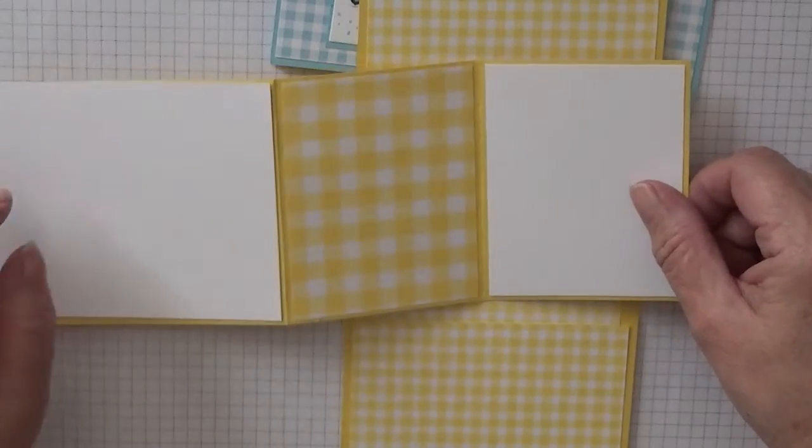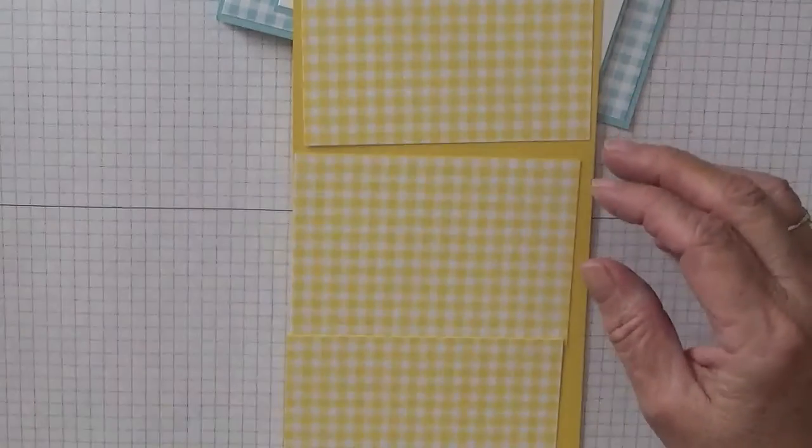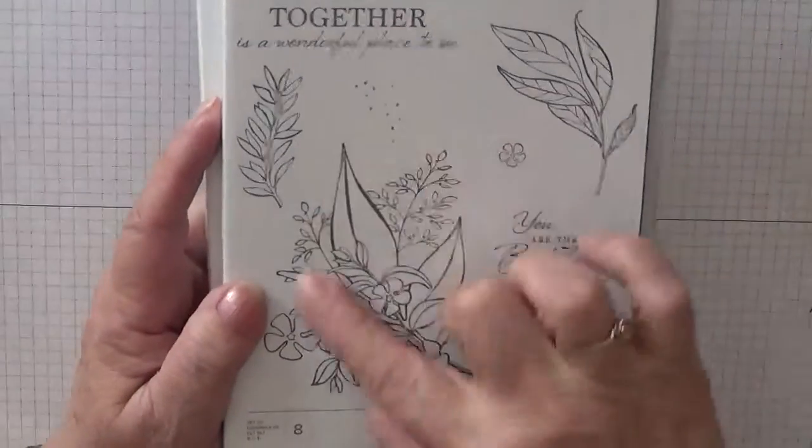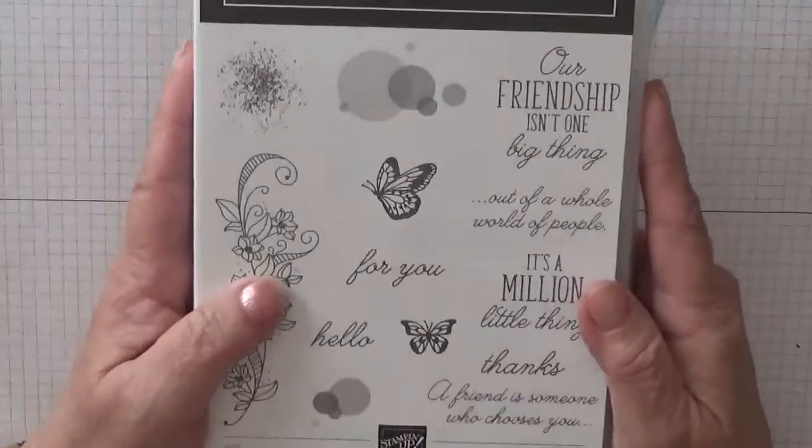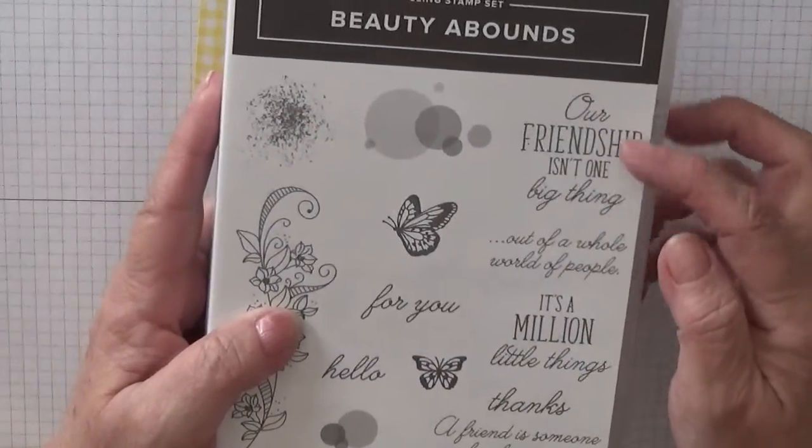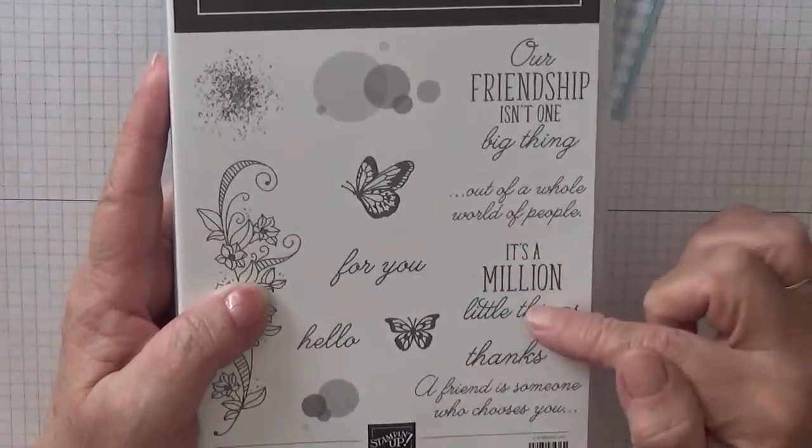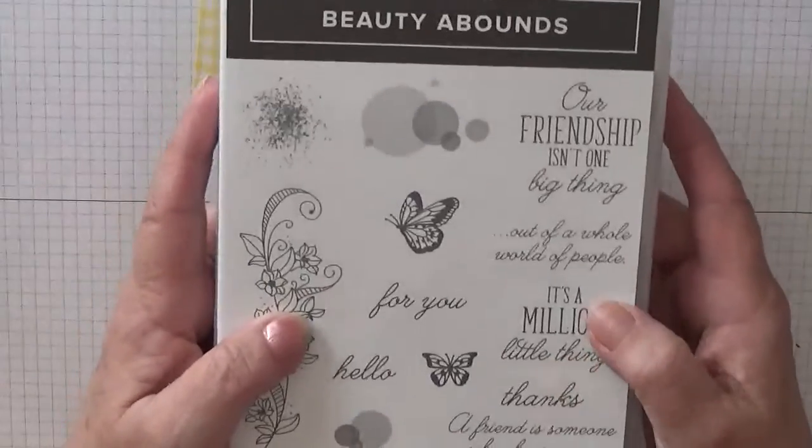So the stamp sets we're using is Wonderful Romance and we're just going to use the flower image. And Beauty Abound, and we're going to use 'our friendship isn't one big thing, it's a million little things' since this is for my card pal.